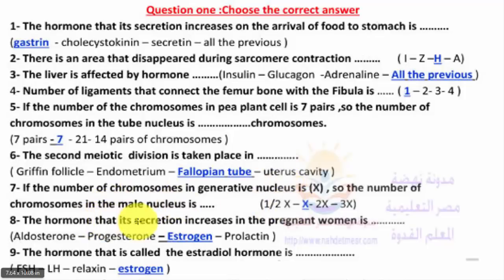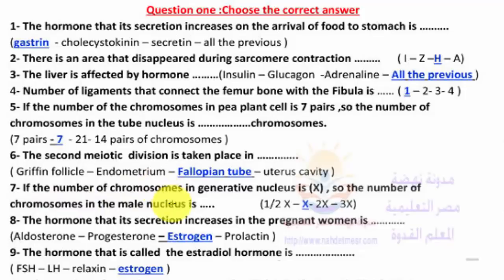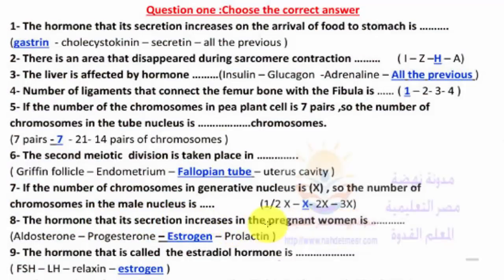The hormone whose secretion increases in a pregnant woman is estrogen. Progesterone hormone also plays an important role in the menstrual cycle and in maintaining the early stages of pregnancy. It may also be involved in the growth of certain cancers.